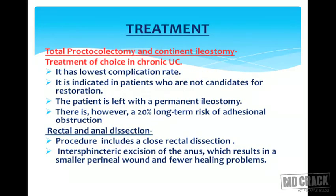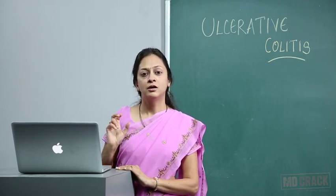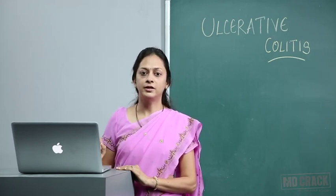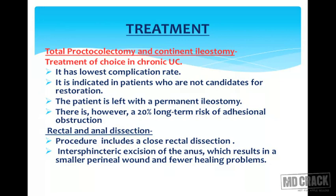The surgical treatment of choice in chronic ulcerative colitis is total proctocolectomy with continent ileostomy — this is a frequently asked exam question. It has the lowest complication rate and is indicated in patients who are not candidates for restoration, but the patient is left with a permanent ileostomy, which is a disadvantage. There is a 20% long-term risk of adhesional obstruction. The procedure includes close rectal dissection then intersphincteric excision of the anus, resulting in a smaller perineal wound and fewer healing problems.